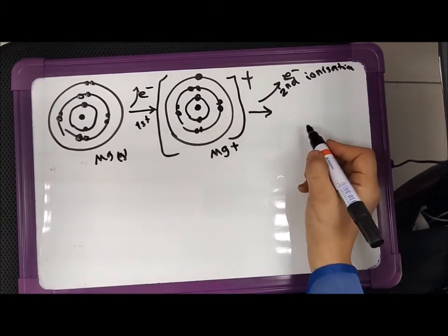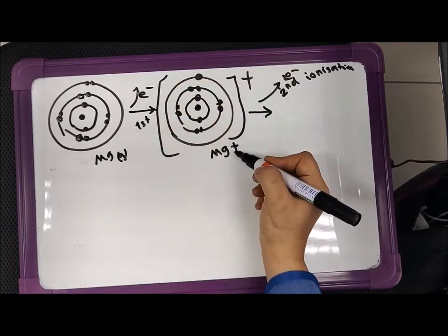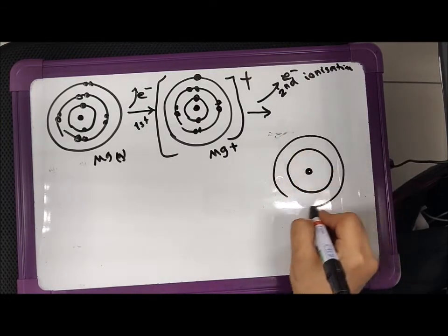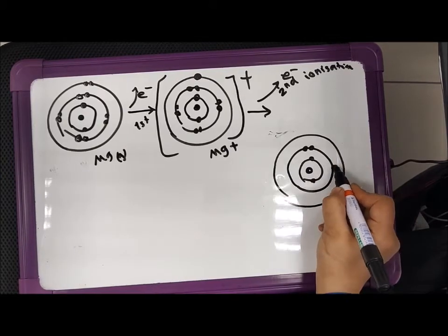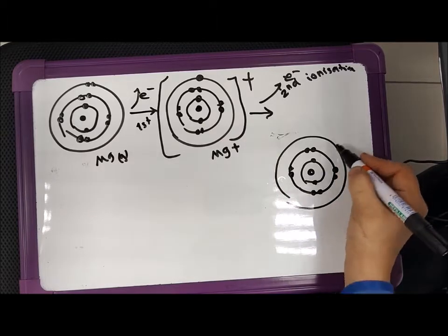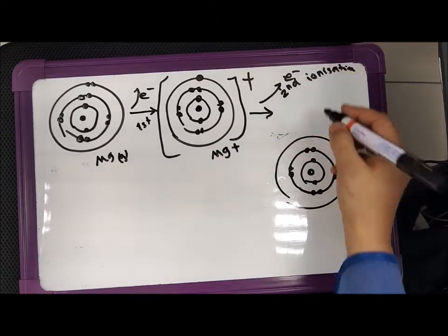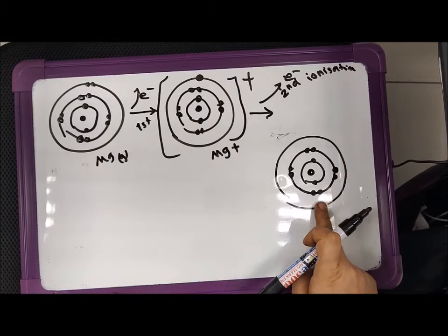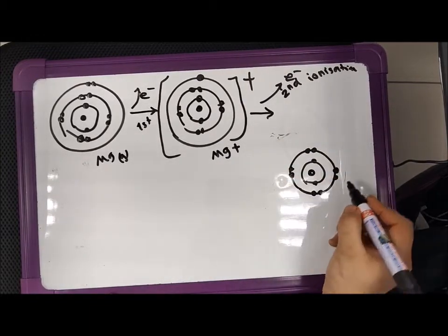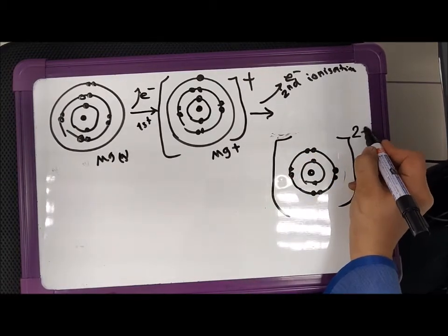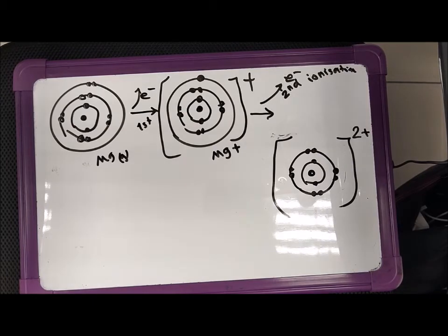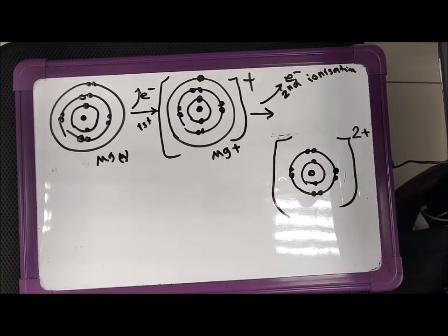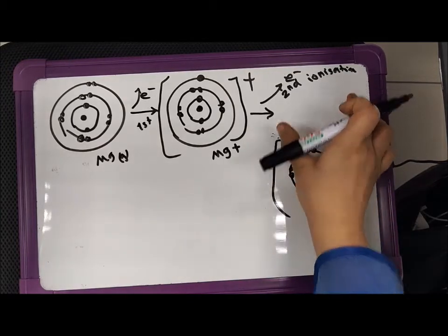So how do I draw this? This Mg+ can be changed into Mg2+ because now another electron is lost from it. As you can see, the last outermost shell is now empty, so I simply remove it. Put it in brackets and write two plus because two electrons total are lost from this Mg+ ion. This is called the second ionization energy.